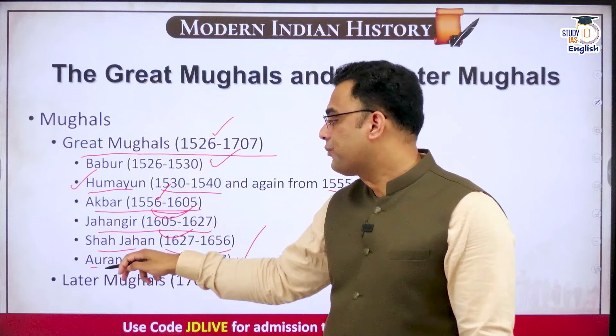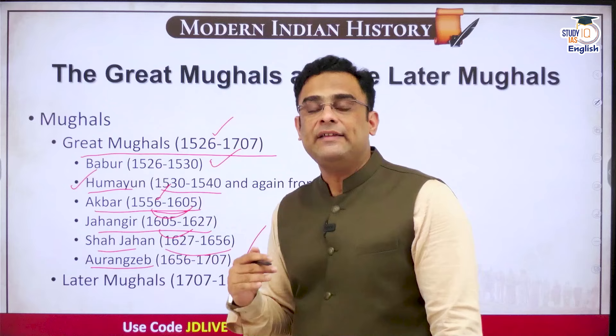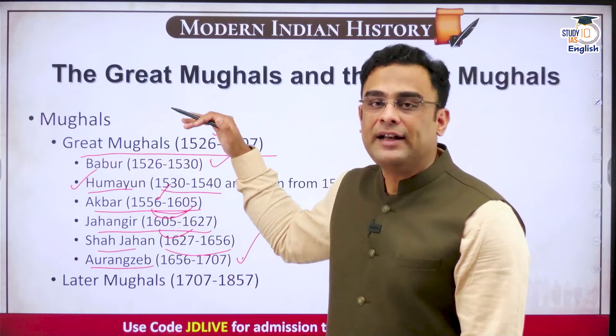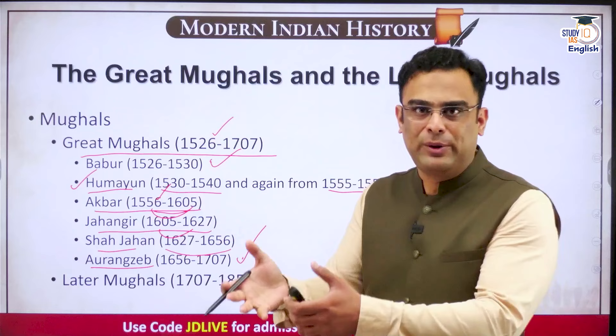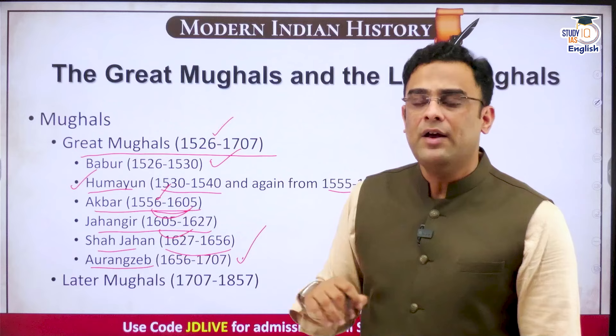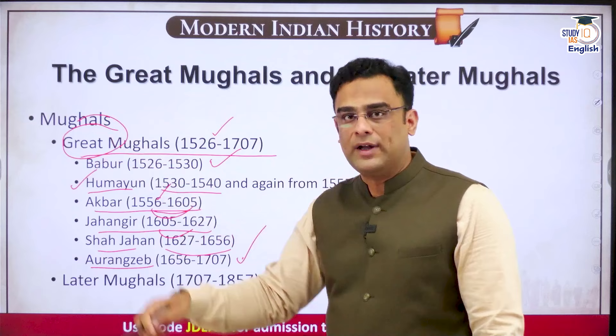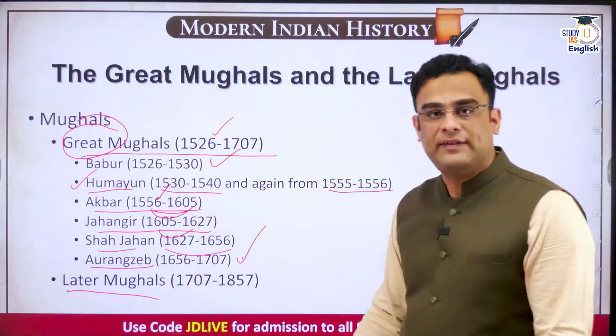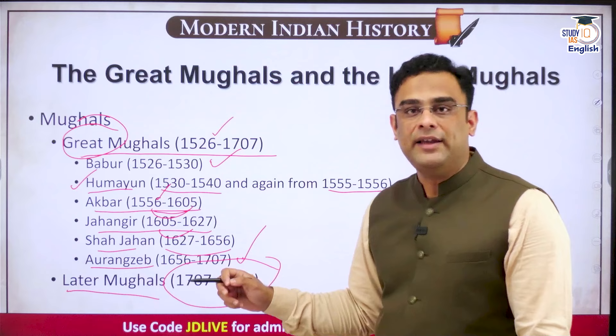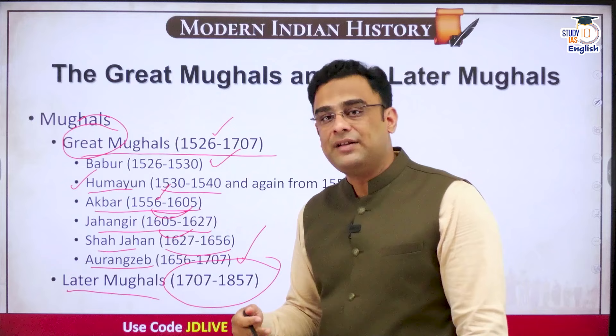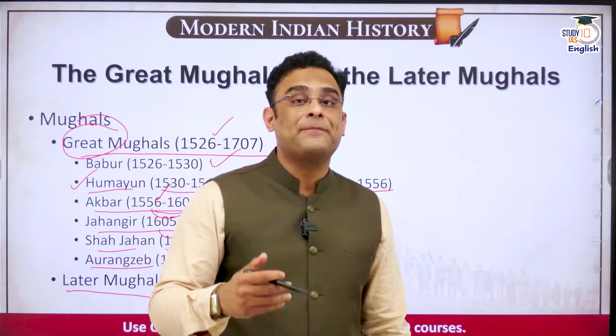After the death of Aurangzeb, no successor could in any way match the greatness of their predecessors. The Mughals had certain policies which can be criticized in hindsight, but one must admit they were able to stretch and maintain a huge empire — quite an achievement for that day and age. These are referred to as the Great Mughals. The subsequent rulers are known as the Later Mughals. The period from 1707 till 1857, when the Mughal rule finally ended, is called the period of the Later Mughals — and our focus in this session is their period of decline.